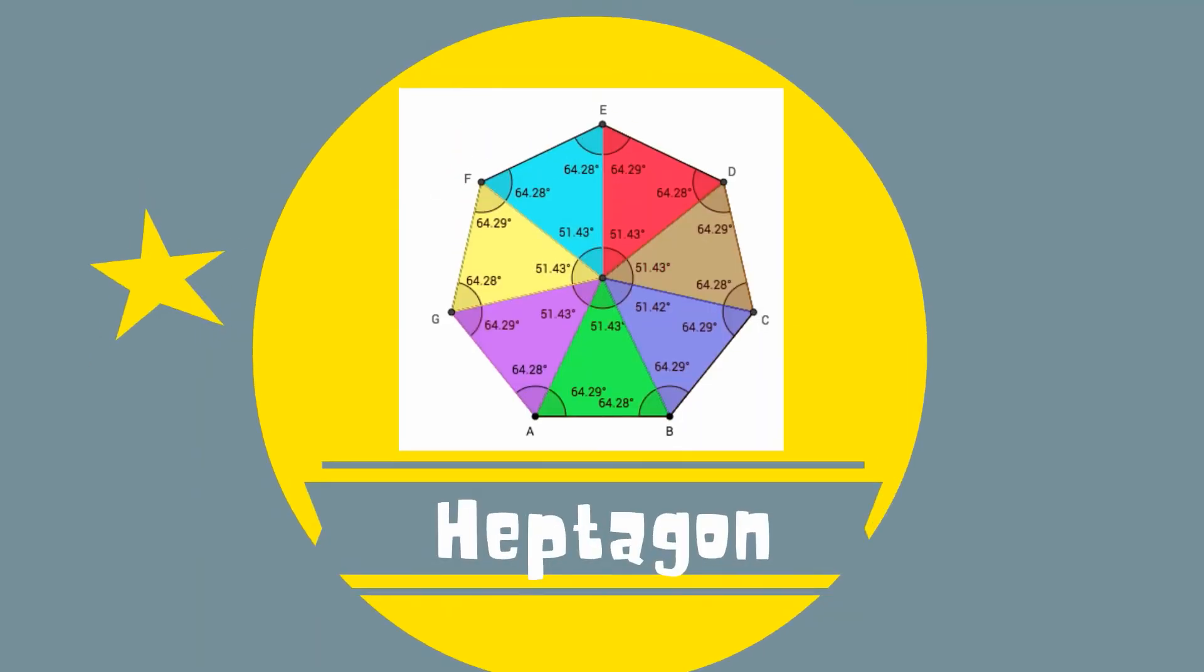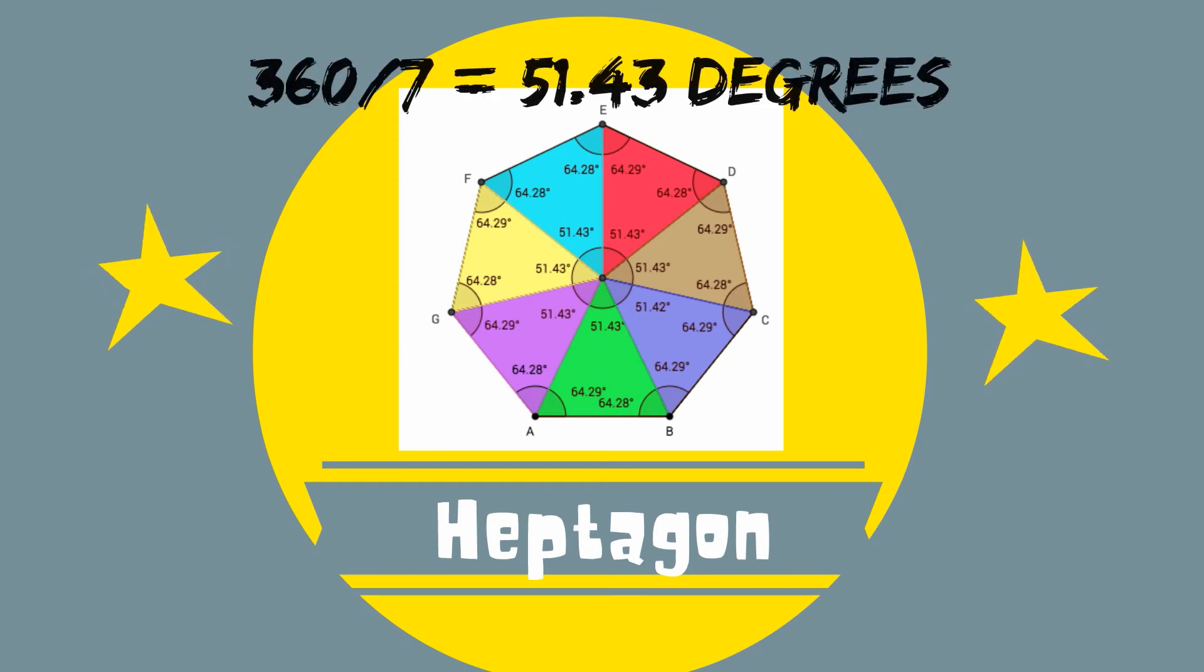You can get the measure of the central angle by dividing 360 degrees by 7, and it equals 51.43 degrees.